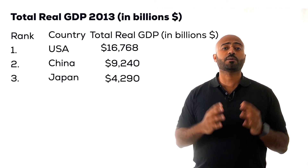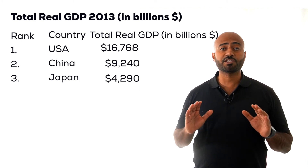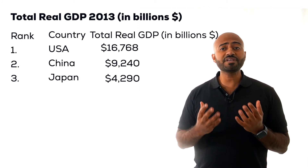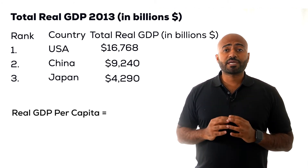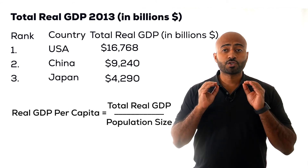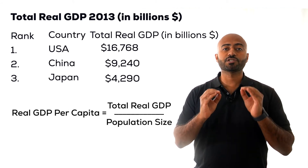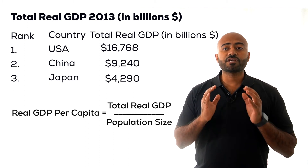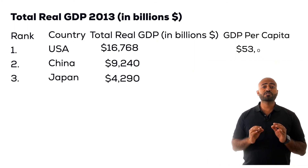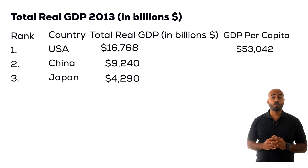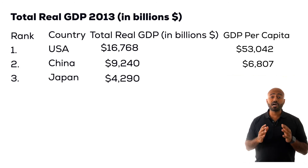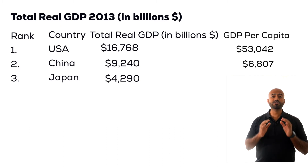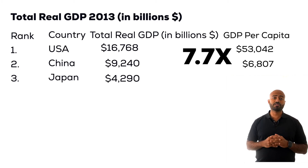As you know, these are total numbers. All three countries vary in population size, so to compare living standards we will calculate GDP per capita. Remember that real GDP per capita is equal to total real GDP divided by population size. We find that the US GDP per capita is $53,042, whereas for China it is $6,807. The gap between the countries is larger when we take population into consideration — the US average living standards are actually 7.7 times larger than China's.